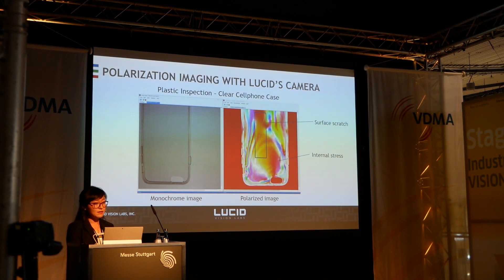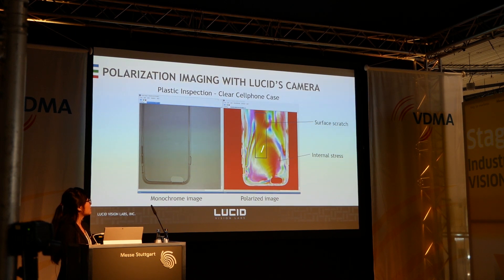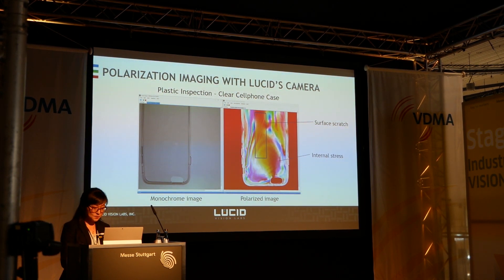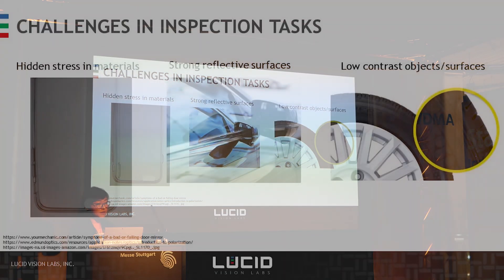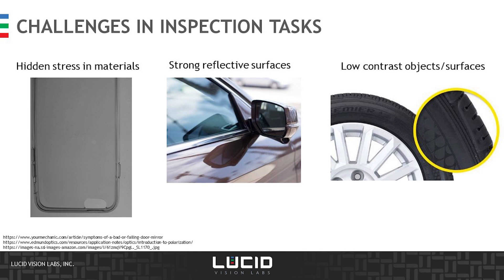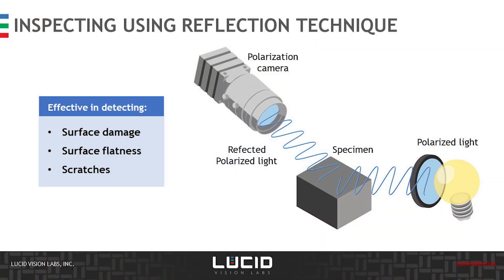A typical use case is inspecting transparent plastic materials such as a cell phone case. On the left side you will see a regular monochrome image — you can't extract much information other than the rectangular object and its edges. But in the polarization image mapped onto the HSV color wheel, not only do you see the internal stress mapped into vibrant colors, you will also see a scratch mark being characterized in the rectangular box. Challenges in current inspection tasks include looking at internal stress in clear plastic, as well as highly reflective surfaces or objects with low contrast. One technique involves shining polarized light onto a specimen, looking at the reflected light, and detecting changes in polarization state — effective for detecting surface damage, surface flatness, scratches, and dents.